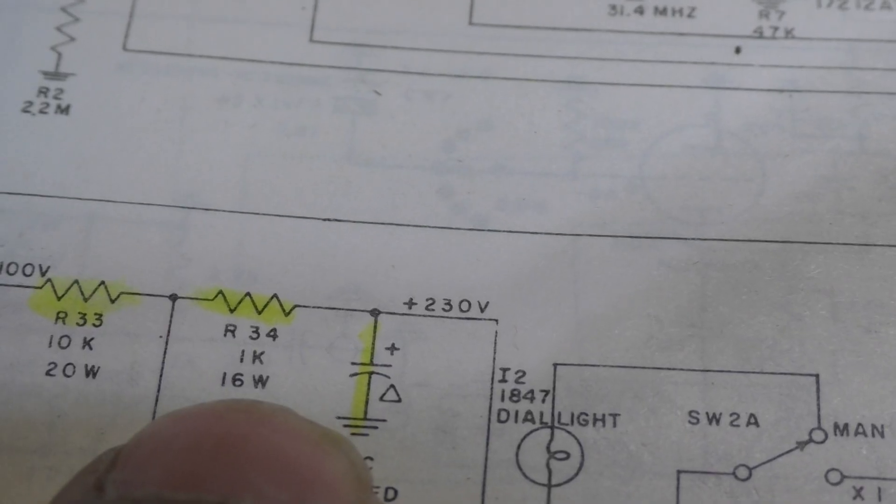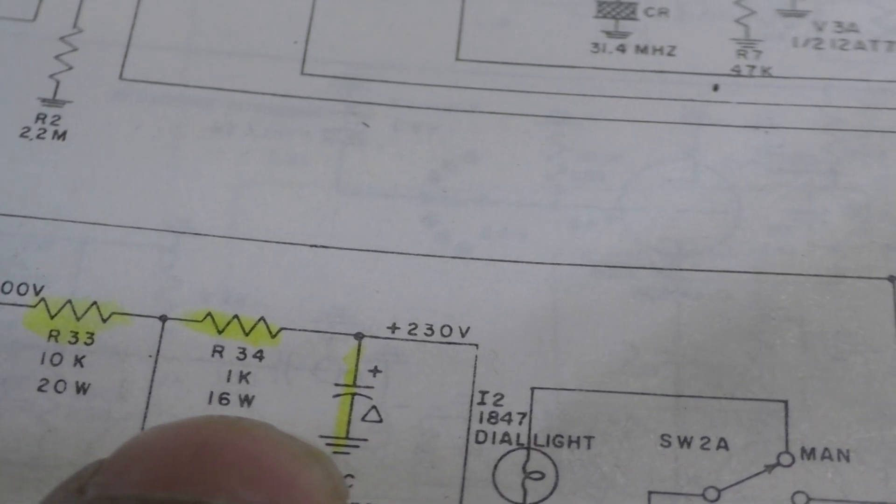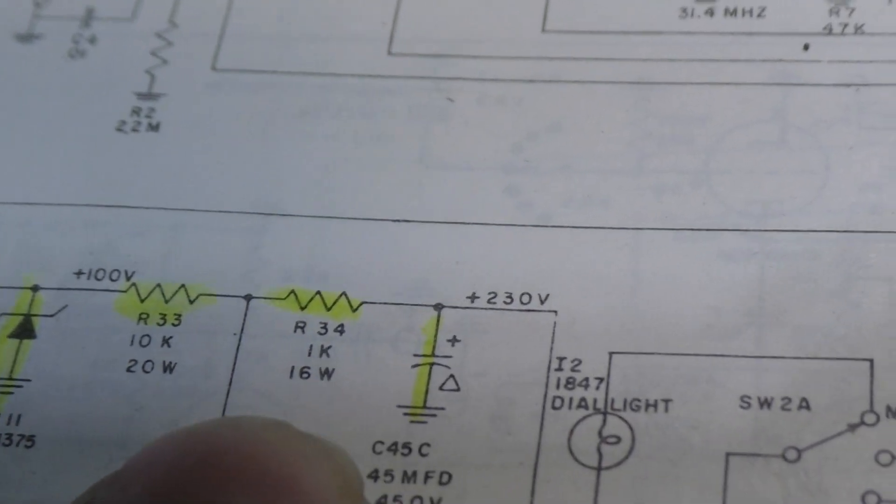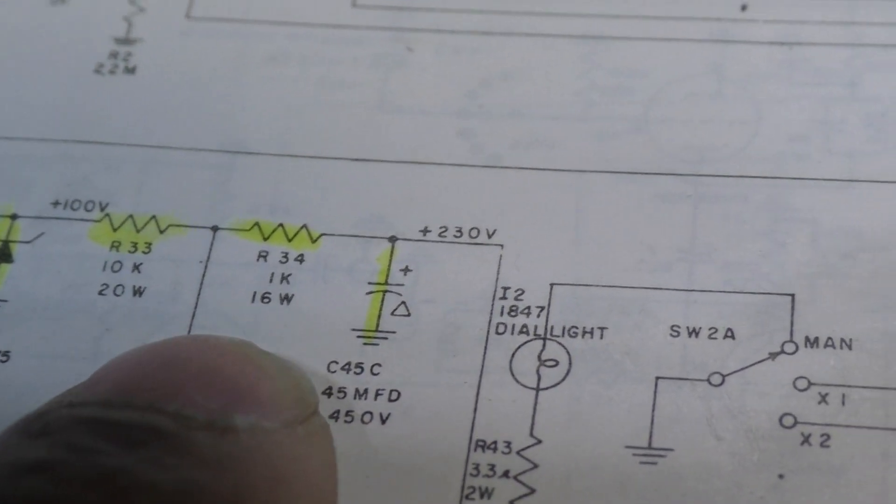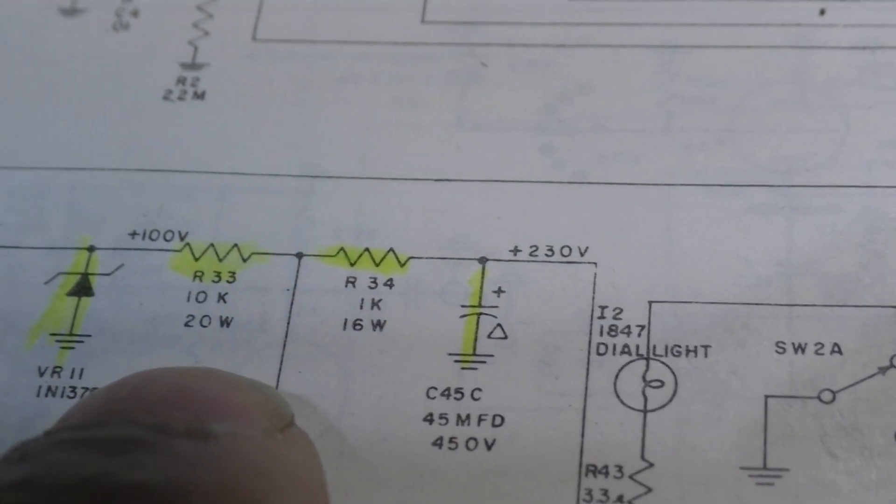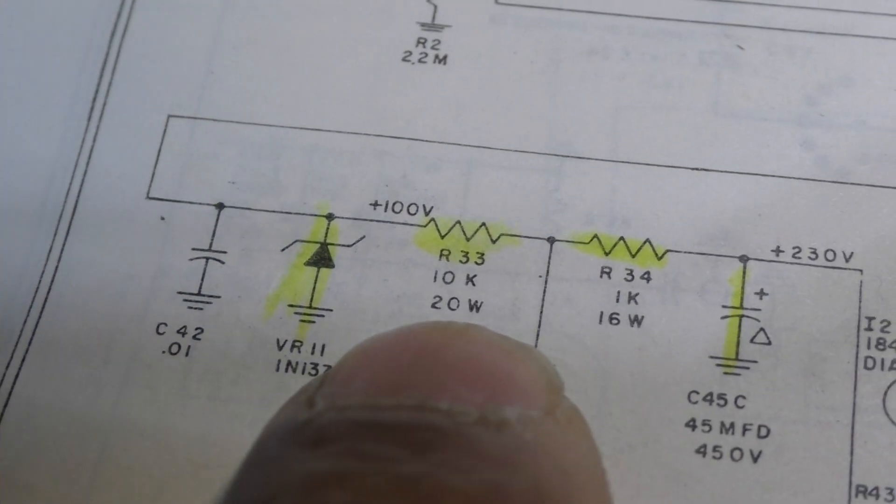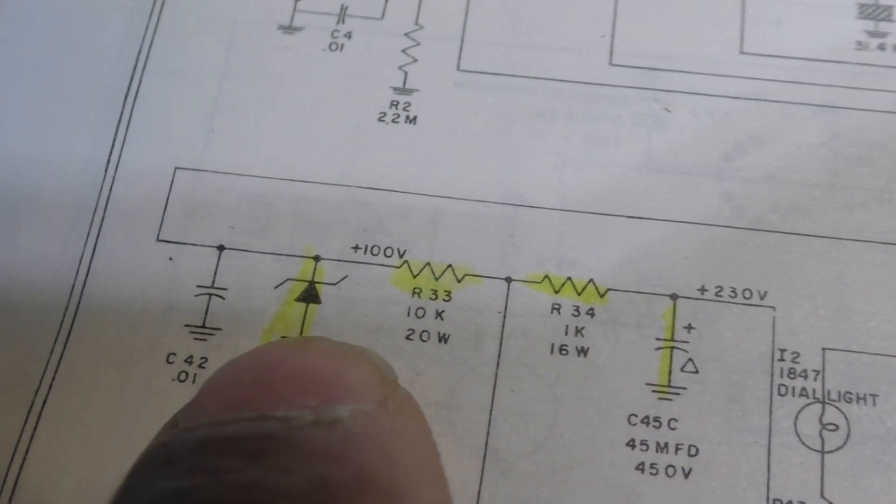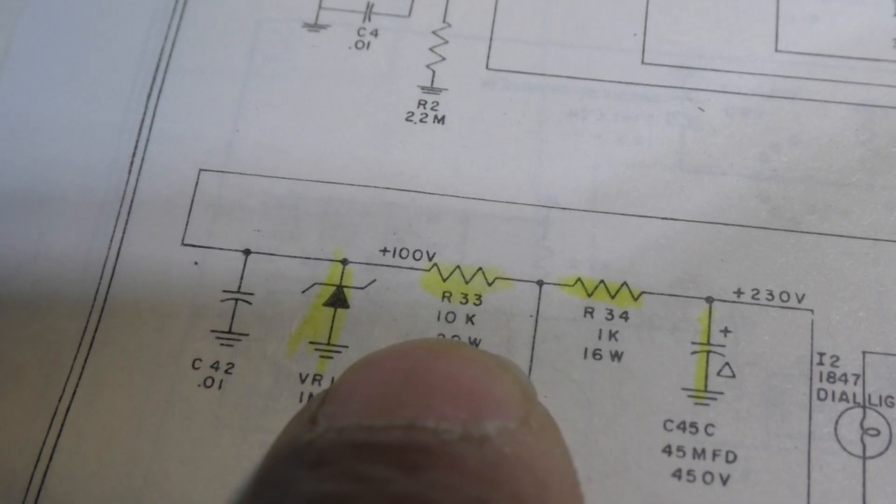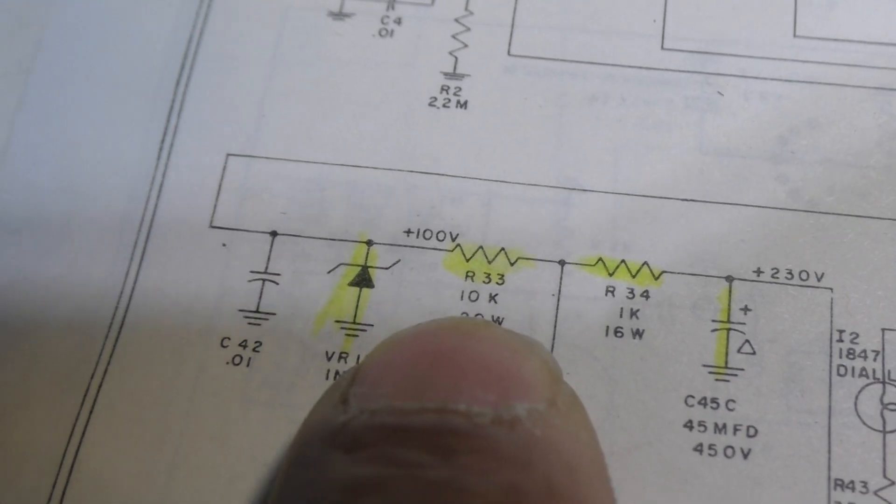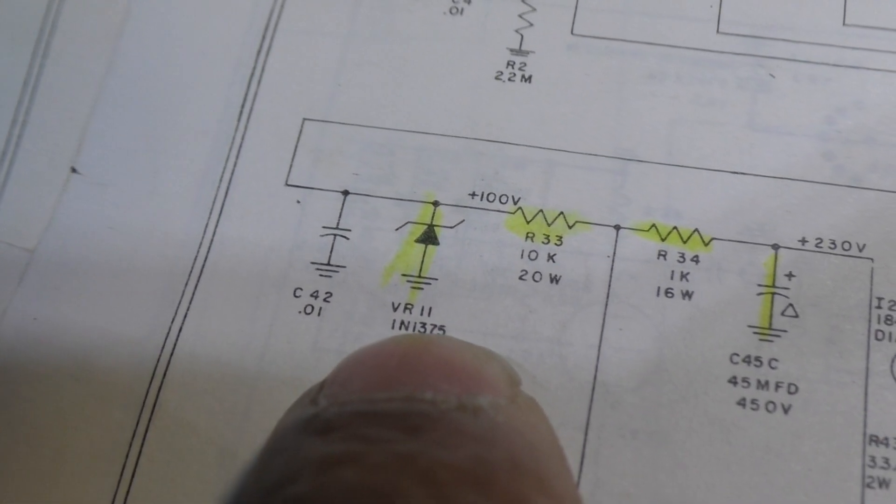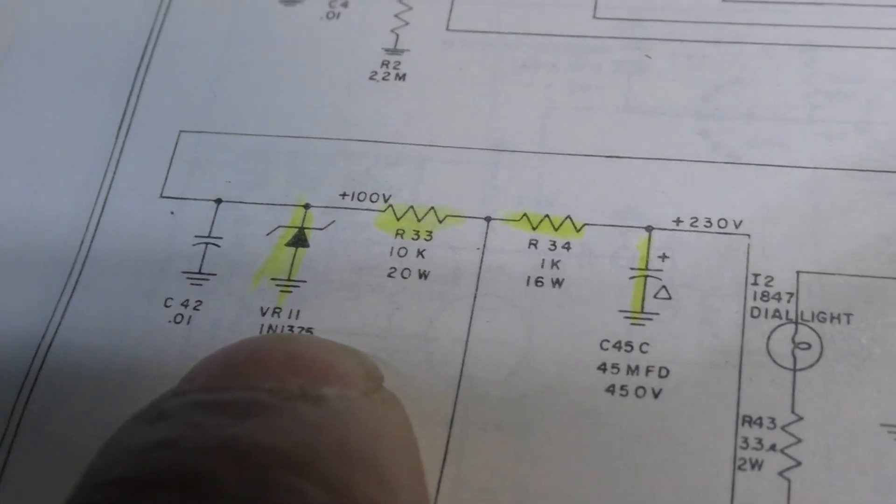And then it goes up here to R34, 1k 16 watt. That's the other side of that resistor. That goes bad, opens up. Resistors usually open, they don't really short. They open or go high. If you have that, you're not going to have the voltage you're supposed to have, so check your voltage. The other cylindrical resistor is that one, R33. That also is a dropping resistor that goes over here to the zener diode. Sometimes that resistor opens or goes high and it doesn't provide enough power for that zener diode to kick in and regulate it.